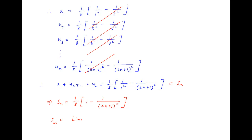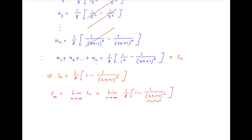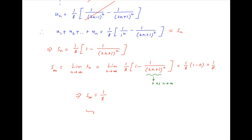The sum to infinity is equal to the limit of Sn as n tends to infinity, which equals the limit of 1 upon 8 times [1 minus 1 upon (2n plus 1) whole square] as n tends to infinity. The second term tends to 0, so the value is 1 upon 8 times (1 minus 0). Therefore the sum to infinity of the given series is equal to 1 upon 8.